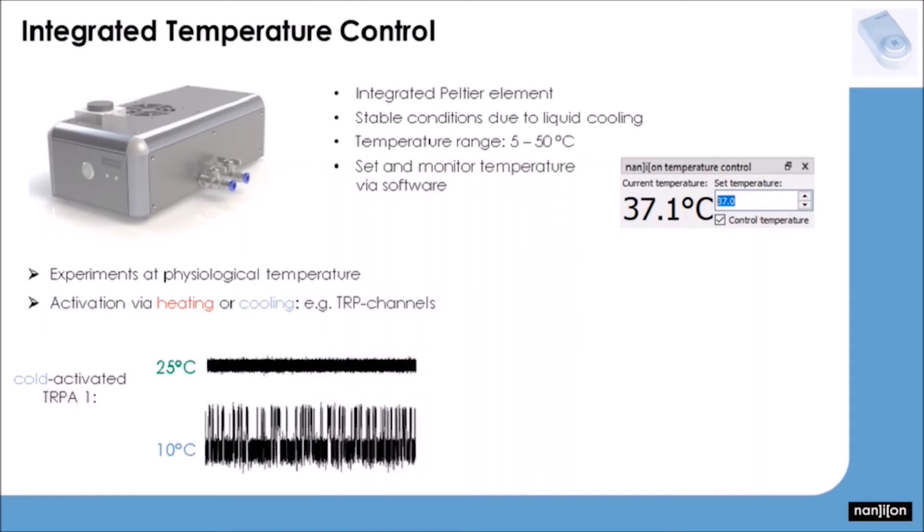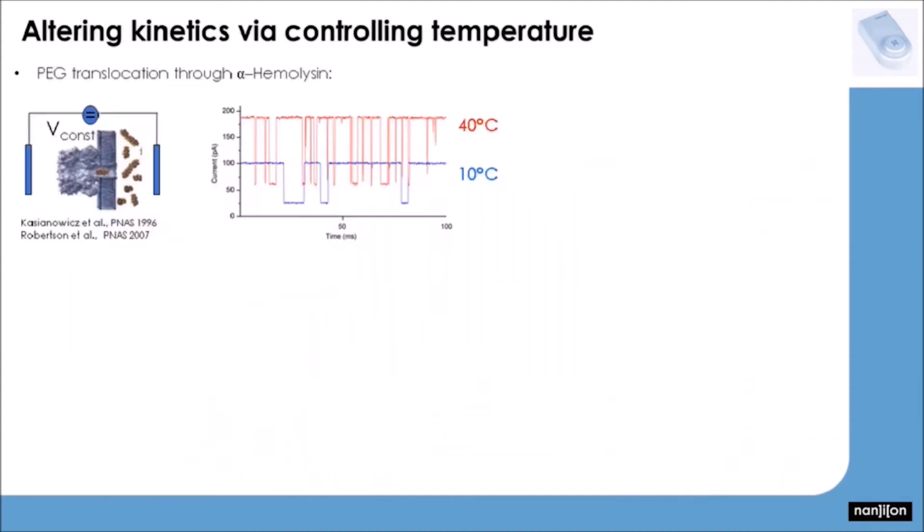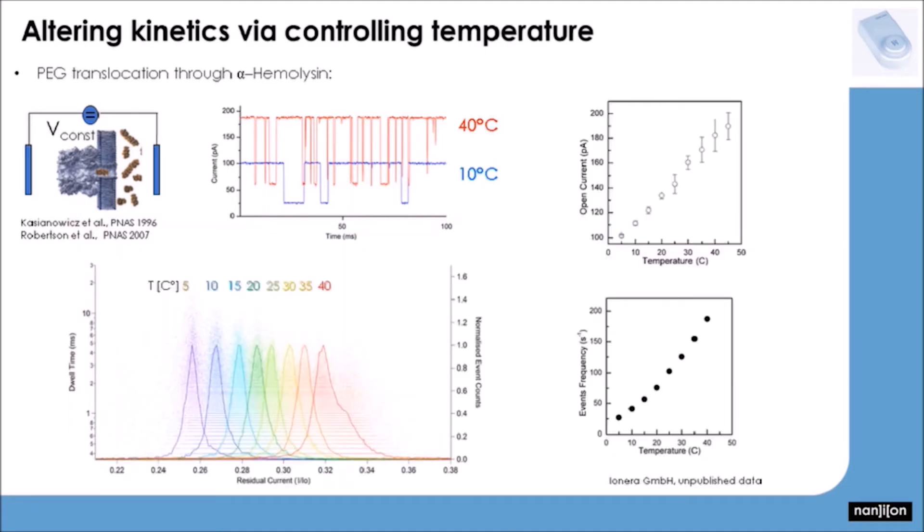The cold-sensitive channel TRPA1 can be activated by lowering the temperature, whereas the heat-sensitive channel TRPV1 exhibits more activity at elevated temperatures. You could furthermore also alter the kinetics of an experiment via control of the temperature. You could slow down translocation by lowering the temperature and thus widen individual events. Like this, you could catch events that might otherwise be too short to be detected. On the other hand, you could increase currents and even frequency for faster data generation by heating the whole system up. Both would be available at the push of the button in the software.